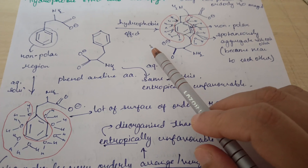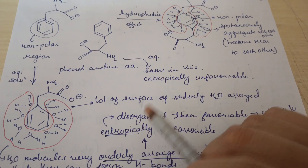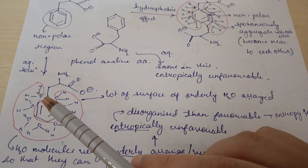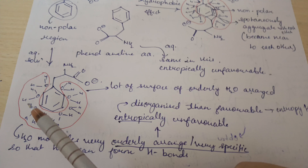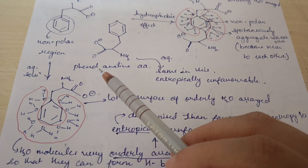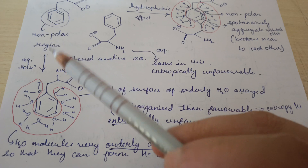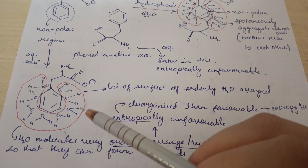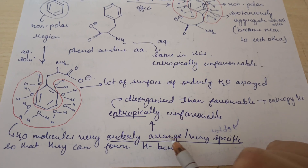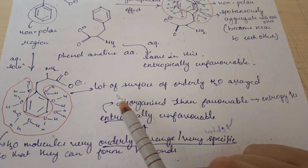Before adding phenylalanine into the water, the water molecules were not organized — they were moving randomly. But after adding the phenylalanine in water, they become orderly arranged around the molecule. So the system is going from disorder to order. As we know, entropy is the measure of disorderness. The water molecules align themselves very specifically around the benzene ring to form maximum hydrogen bonding.